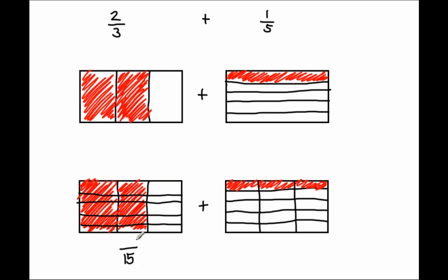So there are 15 equal parts — each of these is now a 15th. Over in the second diagram, there are also 15 equal pieces. So now both wholes show 15ths — the same size, the same denominator, the same unit. How many 15ths are shaded in the first diagram? 2 columns times 5 rows gives us 10 — so I have 10 15ths shaded in. And how many 15ths are shaded over here? 3. So I have 3 15ths.